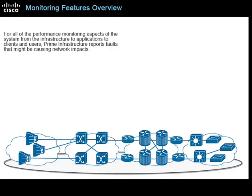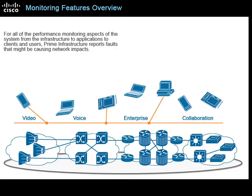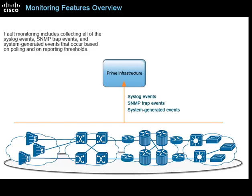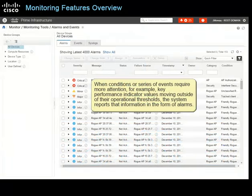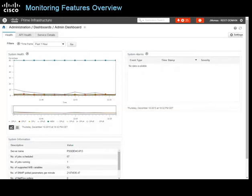For all performance monitoring aspects of the system, from the infrastructure to applications to clients and users, Prime Infrastructure reports faults that might be causing network impacts. Fault monitoring includes collecting all syslog events, SNMP trap events, and system-generated events based on polling and reporting thresholds. When conditions or series of events require more attention, such as key performance indicator values moving outside of operational thresholds, the system reports that information in the form of alarms. Designated users can also perform monitoring of the Prime Infrastructure platform itself, including the server, database, and API health and statistics.